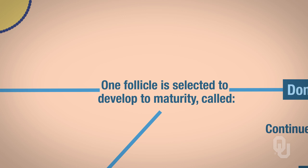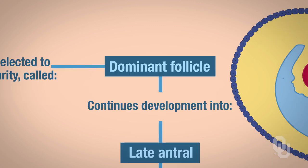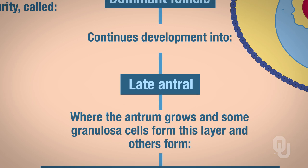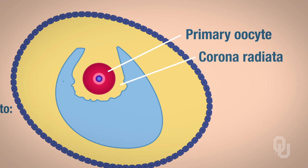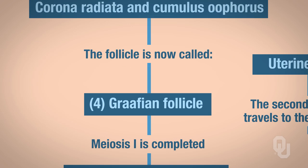When the follicle is either preantral or early antral, one is selected to develop to maturity — this is called the dominant follicle. Development continues and we now have what's called a late antral stage or late antral follicle; look at how much larger the antrum is now in this diagram — it's continued to grow. Some of the granulosa cells of this layer will form the corona radiata, which surrounds the primary oocyte. After all of this, we have what's called a Graafian follicle. Once the Graafian follicle has formed, meiosis I is completed.